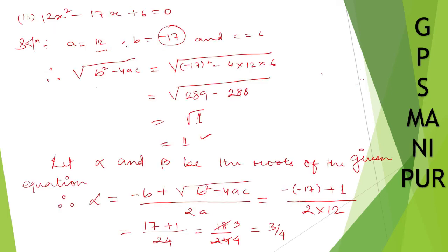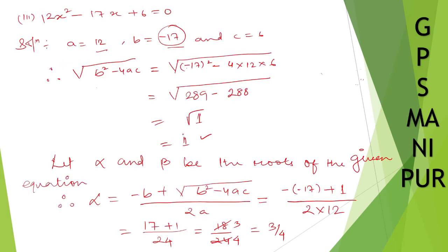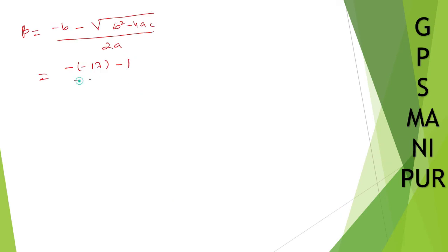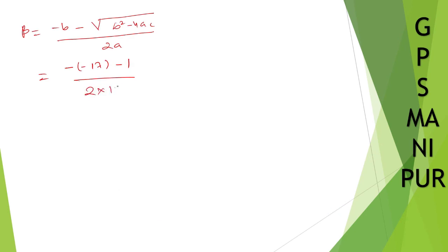Now let us find β. So β will be equal to (-b - √(b² - 4ac))/2a. This is also the formula. So what is -b? So b here is -17. So -(-17) - (b² - 4ac) we got 1. So -1 divided by 2a, 2 into 12. So minus into minus is plus. So 17 - 1 divided by 24.